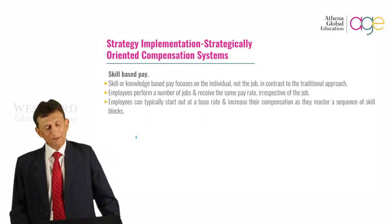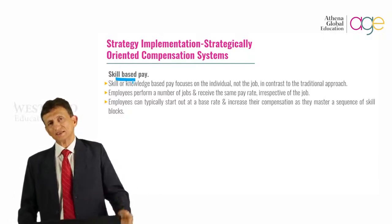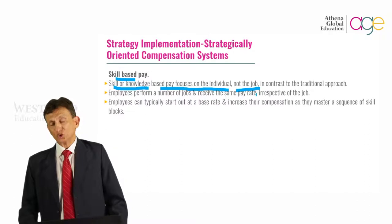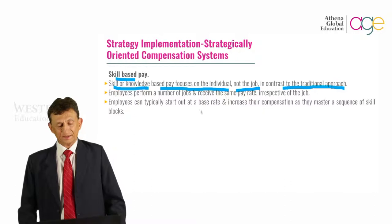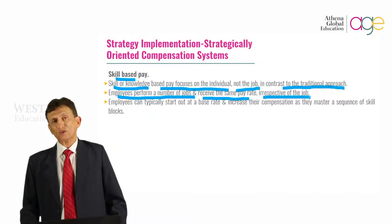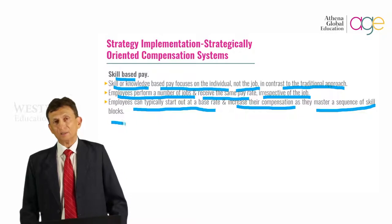The other compensation system is skill-based pay. As the name implies, it is based on the skills that every person has. Skill or knowledge-based pay focuses on the individual rather than the job, in contrast to the traditional approach discussed earlier. Employees perform a number of jobs and receive the same pay rate irrespective of the job they are doing, and employees can typically start out at a base rate.